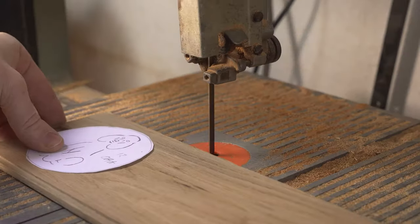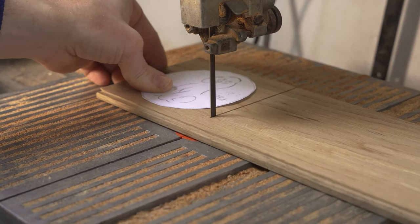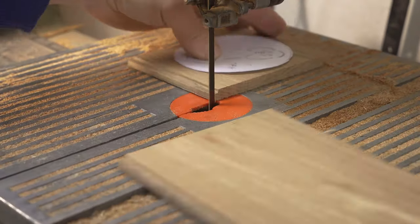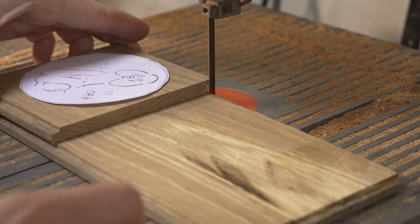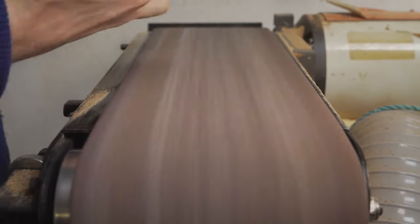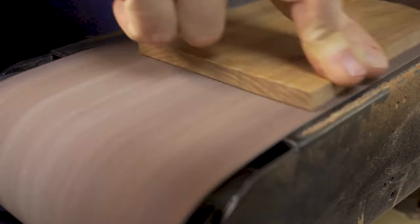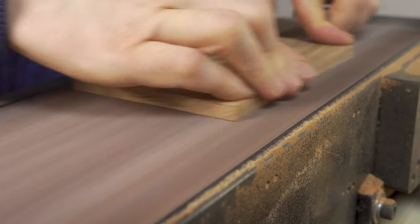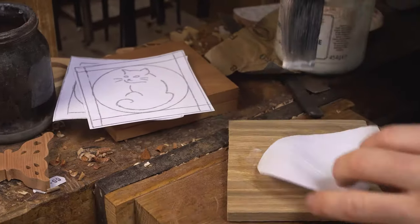We start this process by preparing the wood that we're going to use. The first thing we do is to select the timber. We're using some reclaimed oak that was from some old flooring and some mahogany from old furniture. We prepare the wood and then proceed to prepare the designs. We use a PVA glue solution to stick the designs onto the wood.